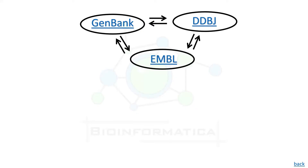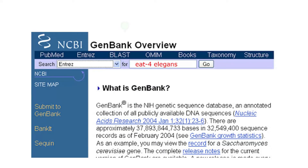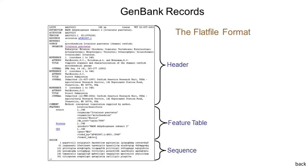Taking them one by one: GenBank is one of the fastest growing repositories of nucleotide sequences. It has a flat file structure — an ASCII text file readable by both humans and computers. This database has been developed and maintained at NCBI, USA. There are several ways to search and retrieve data from GenBank: first, search using Entrez Nucleotide for sequence identifiers and annotations; second, search and align GenBank sequences to a query sequence using BLAST; third, search, link, and download sequences programmatically using NCBI e-utilities; and fourth, flat file formats are available on NCBI's anonymous FTP server.